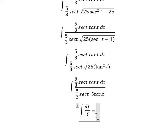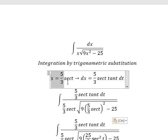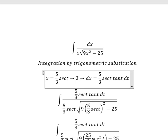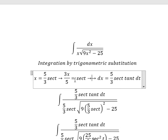So the integration of this gives us t over 5 plus C. To find the value of t, we divide both sides by 5 over 3, and now we can find the value of t.